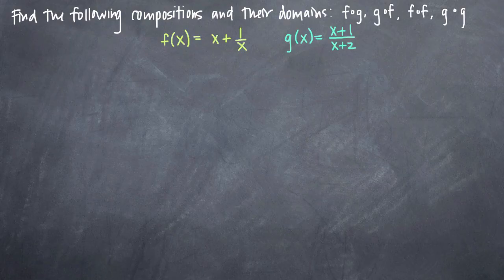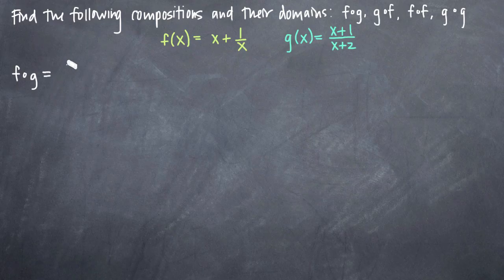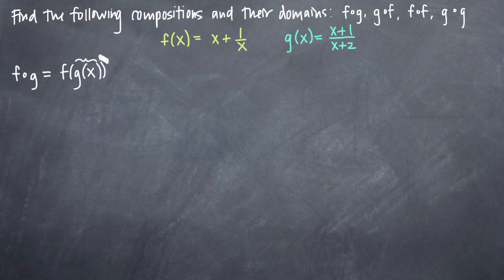So this will be in two parts: one, we'll be finding the compositions of these functions, and then we'll be stating the domains of the compositions. Let's take a look at f of g first. We can denote f of g using composition notation — that's equal to f of g of x. Both notations mean the same thing: we're going to be plugging g of x into our f of x function. So we have to look at g of x as x plus 1 over x plus 2, and we're going to plug that in to f of x everywhere we see x.